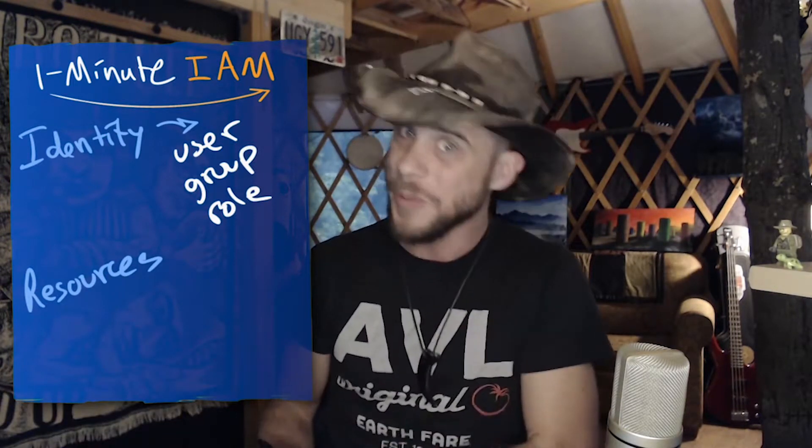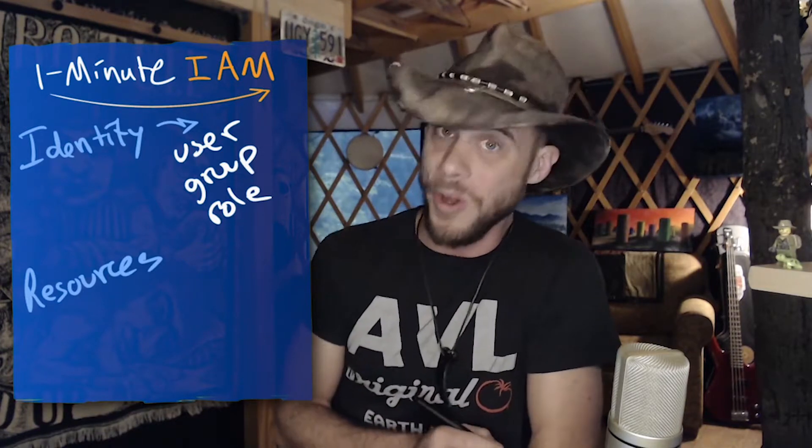There are further distinctions inside of these groups for how we use the policies. For example, a service control policy is a resource policy that's attached to an AWS organization, and it creates some very specific scenarios — all of which we'll be looking at in future one-minute identity and access management lessons.